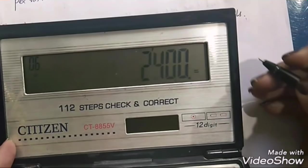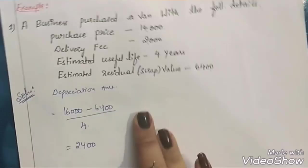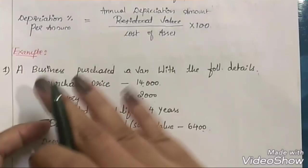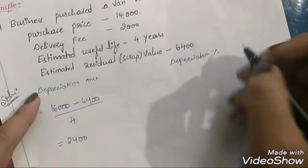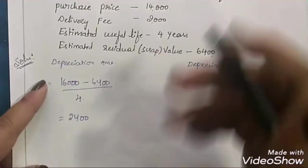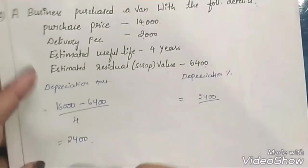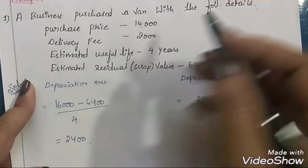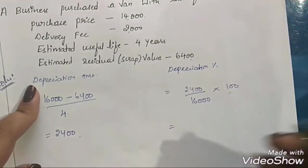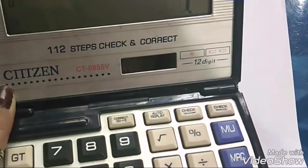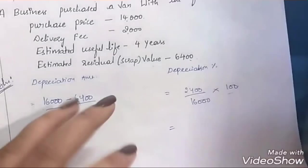To calculate the depreciation percentage per annum: annual depreciation amount of Rs. 2,400 divided by cost of asset Rs. 16,000, multiplied by 100 = 15%. So the rate of depreciation is 15% per annum. This is how you calculate the amount and rate of depreciation under the straight line method.